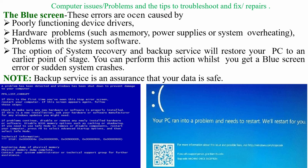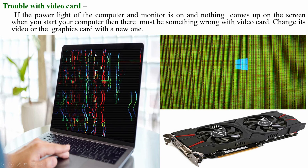Another issue is trouble with the video card. Sometimes when you turn on your computer you may see distorted video output, as shown in these examples. If the power lights of the computer and monitor are on and nothing comes up on the screen, there may be something wrong with the video card — replace it with a new one. In laptops, we may consider re-soldering the GPU; in desktop computers, we may remove the GPU, clean the slots, and reinsert it.